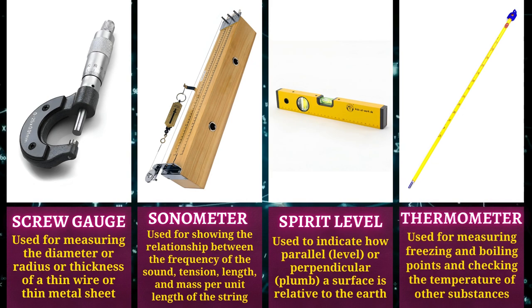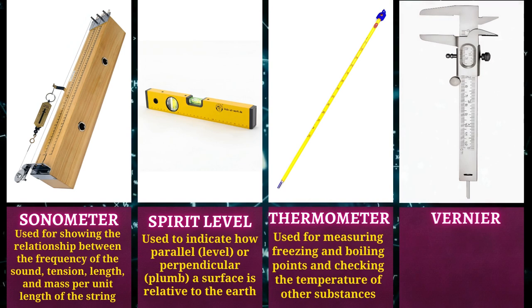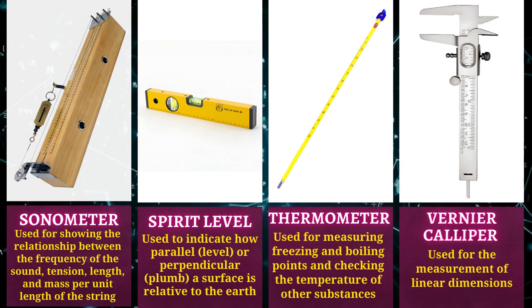Thermometer is used for measuring freezing and boiling points and checking the temperature of other substances. Vernier caliper is used for the measurement of linear dimensions.